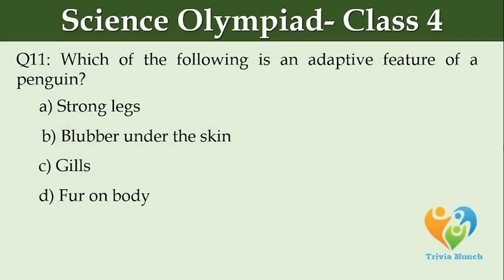Which of the following is an adaptive feature of a penguin? Option A: strong lungs, Option B: blubber under the skin, Option C: gills, Option D: furrowed body.